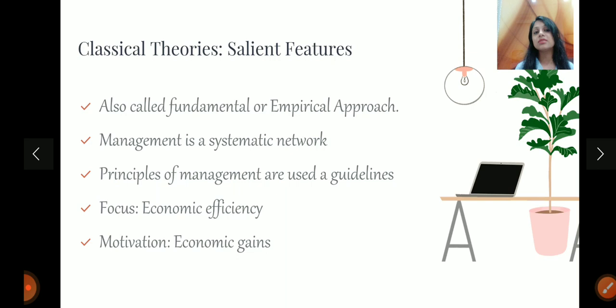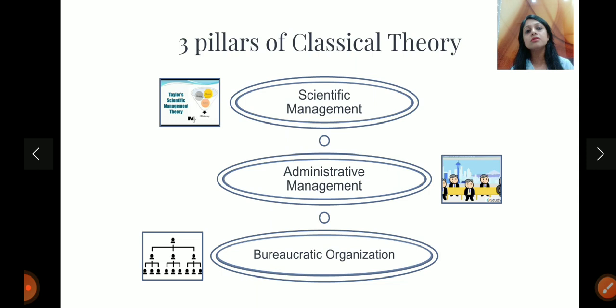Today we are going to talk about the classical theories. So, first classical theory, there are three pillars of classical theory. First is scientific theory, then came the administrative management, and then was a bureaucratic organization. In the today's video, I am going to only focus on the scientific theory of management.